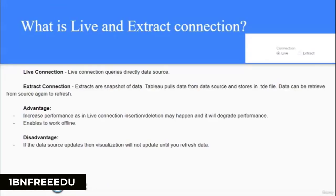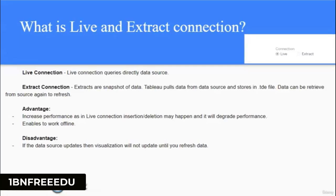Next question: What is live connection and extract connection? In Tableau, drag and drop actions execute queries in the backend. Live connection queries directly to the data source. In extract connection, Tableau first creates a snapshot of data and queries execute on that data. The advantage of extract connection is increased performance because in live connection, insertions and deletions may happen and degrade performance. Extract also enables working offline. The disadvantage is we don't have updated views until we refresh the data.